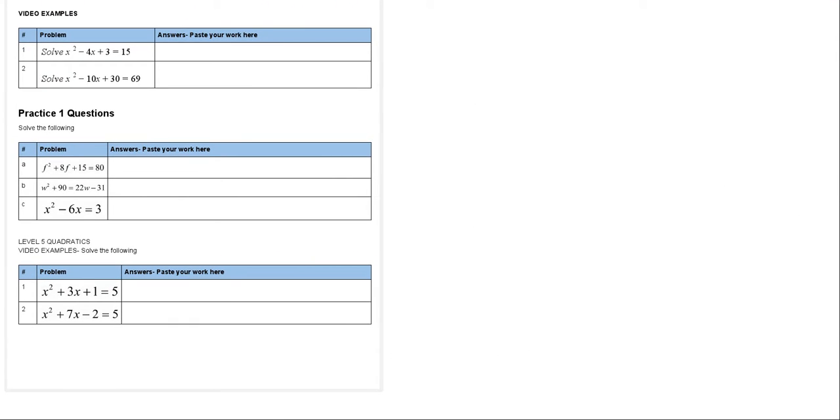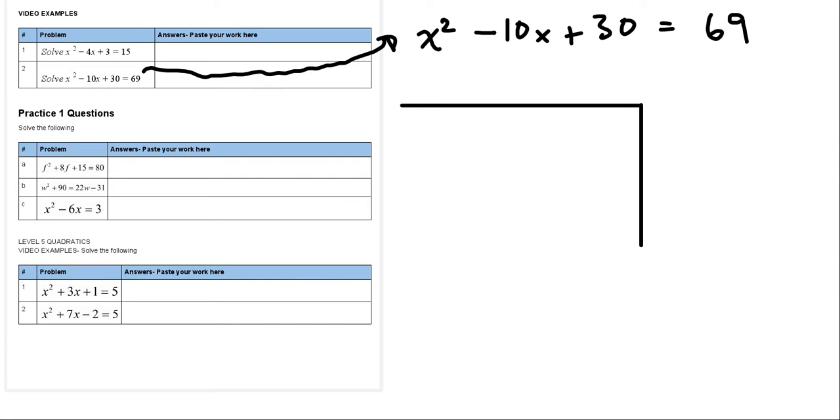Let's try this one. This is number two. Over here we have x squared minus 10x plus 30 equals 69. Well so far the rule has been if we quickly take half of the 10 we kind of have a sense of where this thing goes. So I'm just going to draw this out like this.